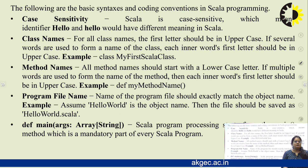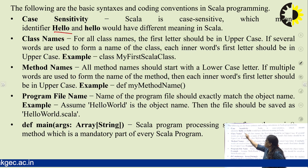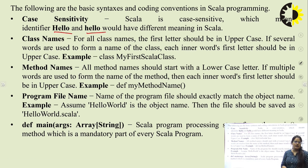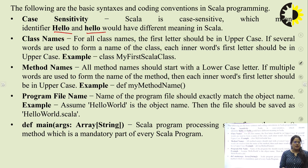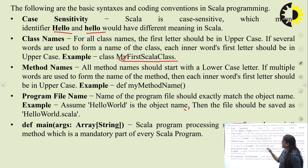There are some basic coding conventions and syntax used in Scala. First is case sensitivity — Scala is case sensitive, meaning 'hello' and 'Hello' have different meanings. Next is class naming: for all class names, the first letter should be in uppercase. If several words form the class name, each inner word's first letter should also be uppercase. Example: class MyFirstScalaClass.